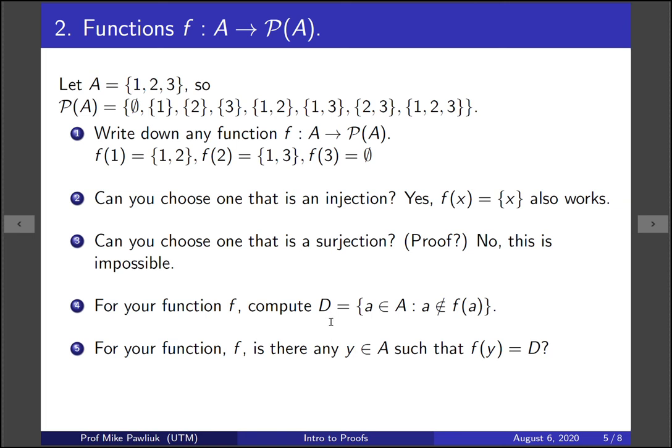But here's what we're going to do formally. Consider the set D, which is the set of all A, such that A is not an element of f of A. This is a confusing thing, but compute it for your function. Let's look at my function. I ask myself, is 1 an element of its output? Well, 1 is, so I don't include 1 in D. 2 here is not in its output, so I include 2 in this set, and 3 is also not in its output, so I include both 2 and 3. So for my set, this D is {2, 3}. For your set, it will be a different thing.